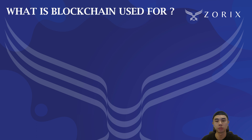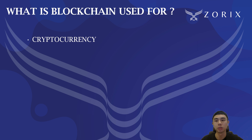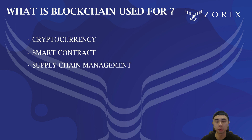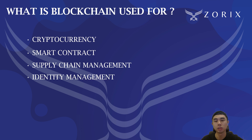So what is blockchain used for? There are many blockchain use cases, but I will only be highlighting a few. The first will be cryptocurrency — for example, Bitcoin and Ethereum. Next, we have smart contracts. We also have supply chain management, which is used to track the movement of goods and products through the supply chain. And we have identity management, which is used to create secure and tamper-proof identity records.